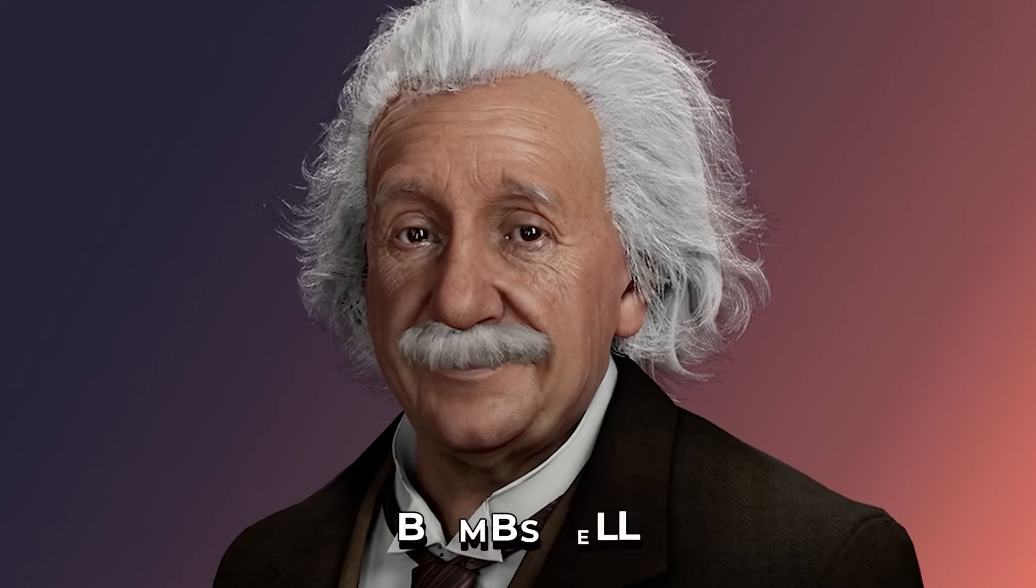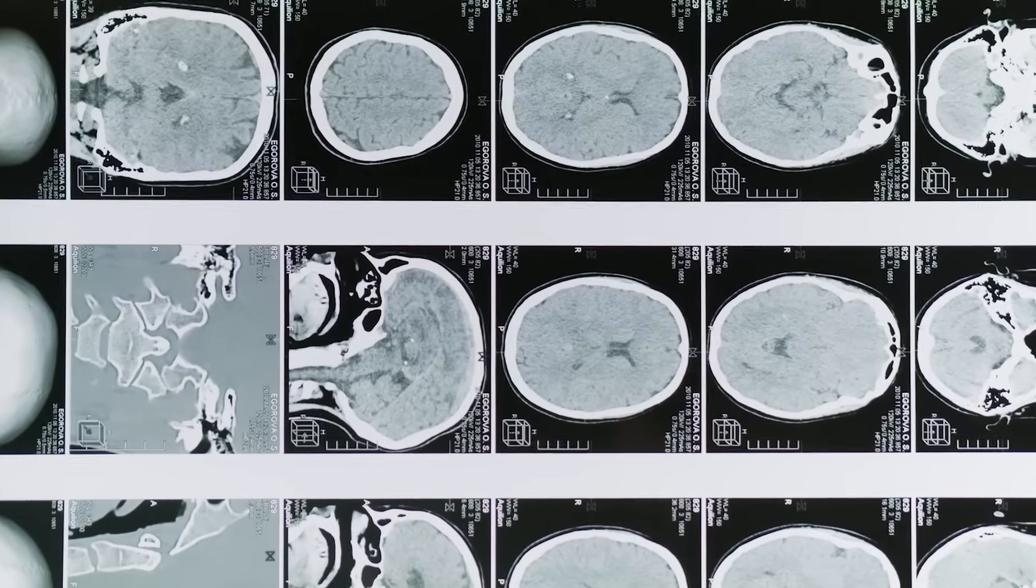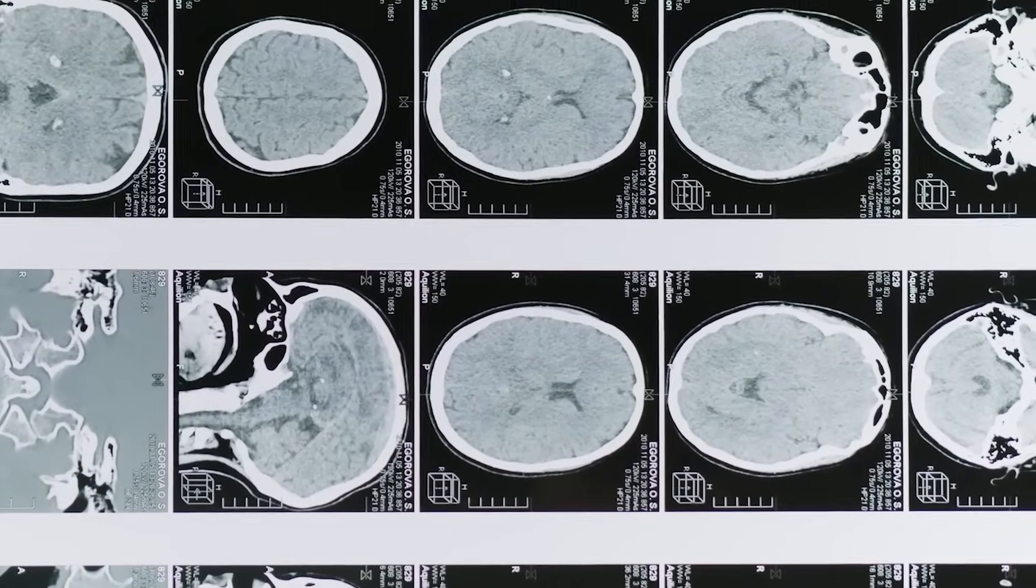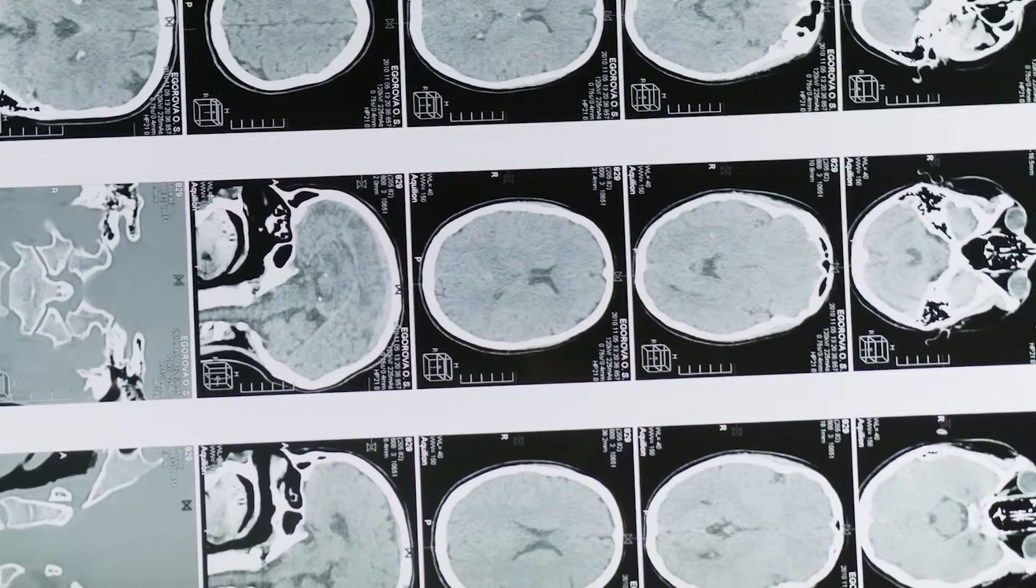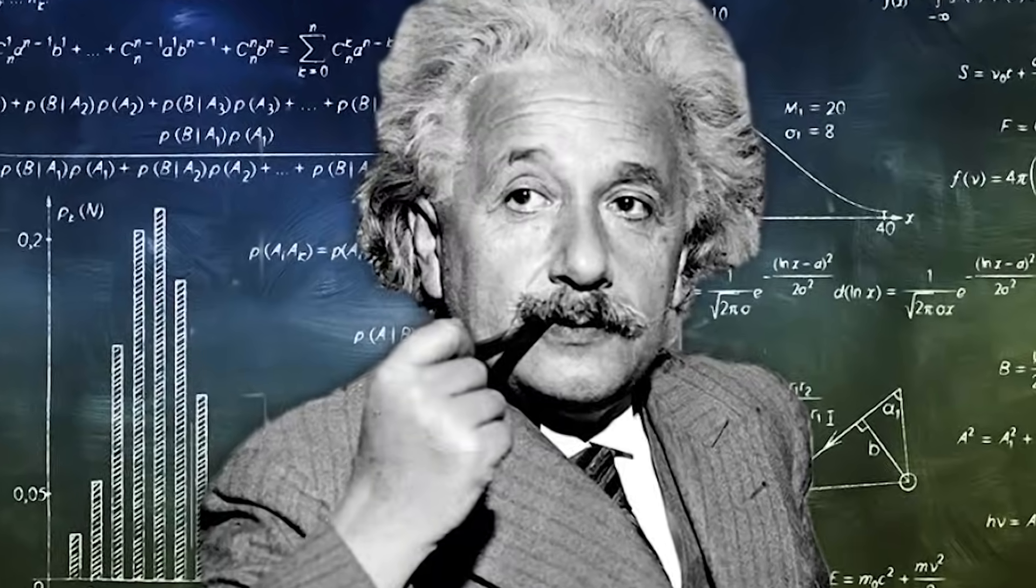Einstein dropped the bombshell that space and time might just be illusions conjured up by our brains. It's not just some mystical mumbo-jumbo. Even the scientific maestro himself was convinced.